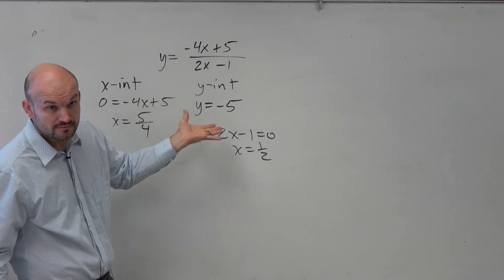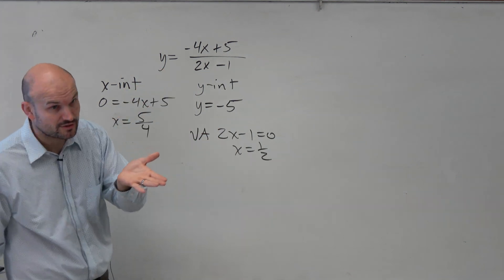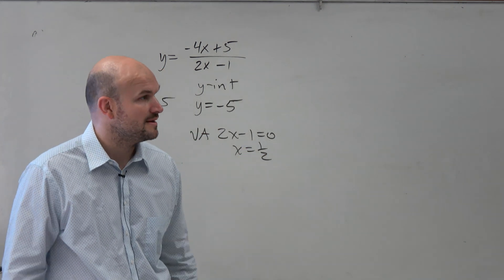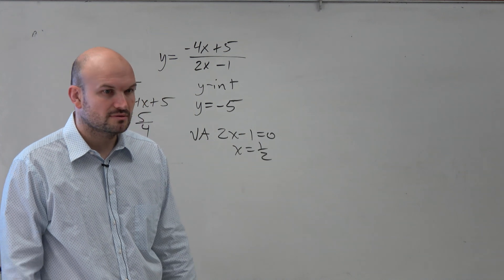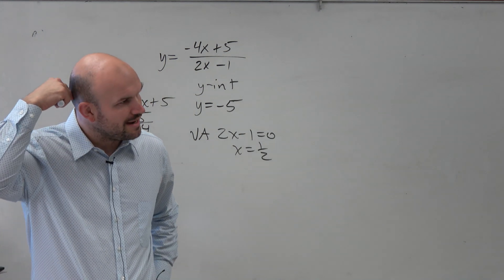This is nothing new. You'd plug 0 in for x and solve. Everything we've covered, we've already covered in this class. But the horizontal asymptote's kind of crazy. How are we going to figure that one out?